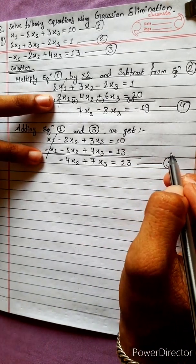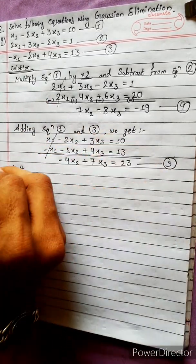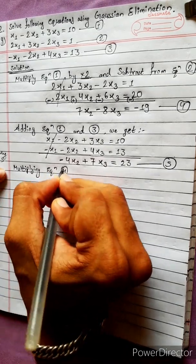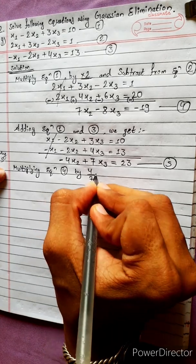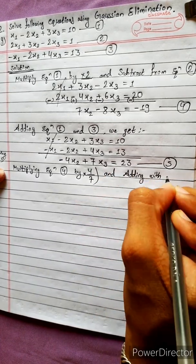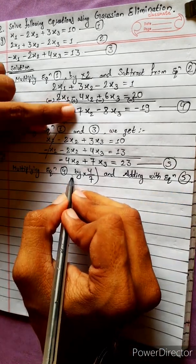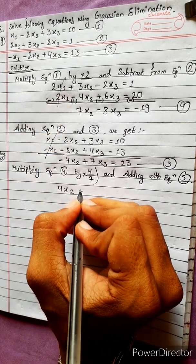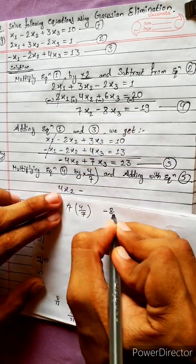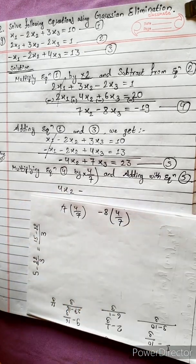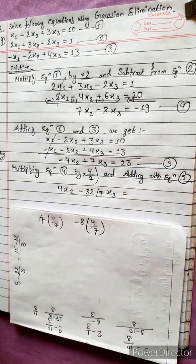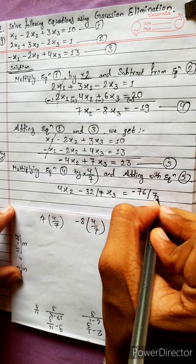Now solving equations 4 and 5. We multiply equation 4 by 4/7 and add with equation 5. Multiplying equation 4 by 4/7: the 7 cancels giving 4x2, and -8 × (4/7) gives -32/7 x3 = -76/7.